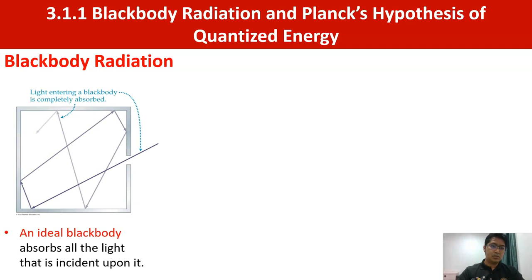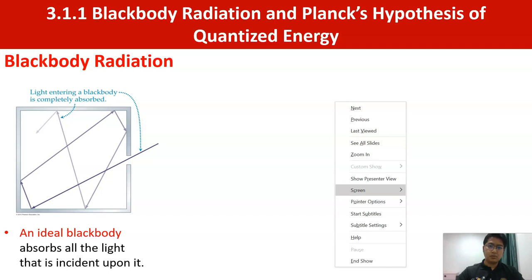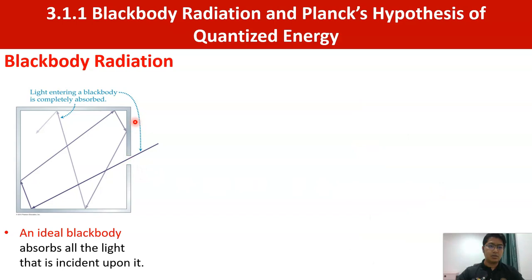This is the model of black body radiation. Light entering a black body is completely absorbed. For an ideal black body, the light will be totally absorbed and will never go out again. An ideal black body absorbs all the light that is incident upon it.